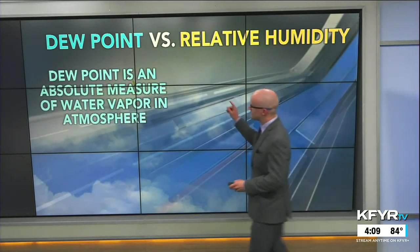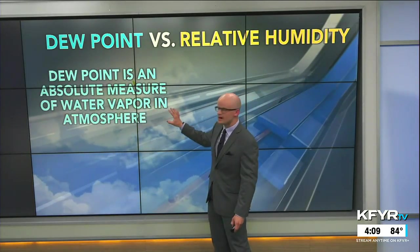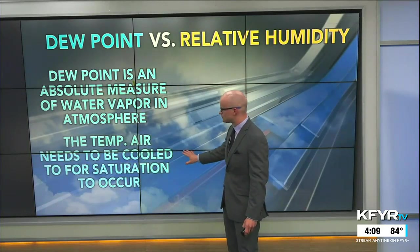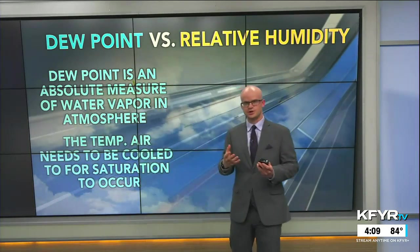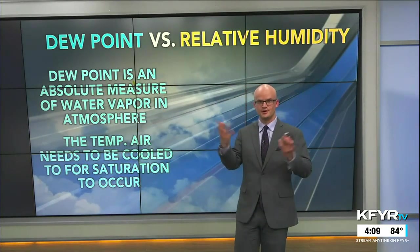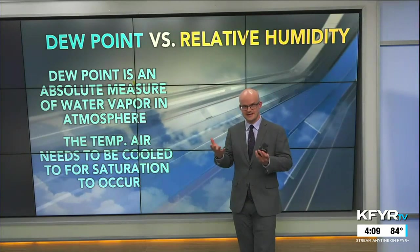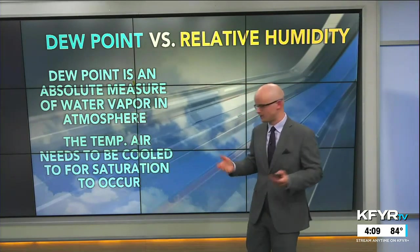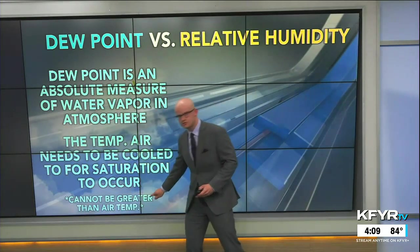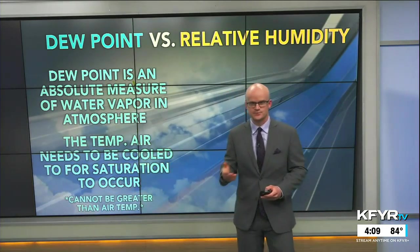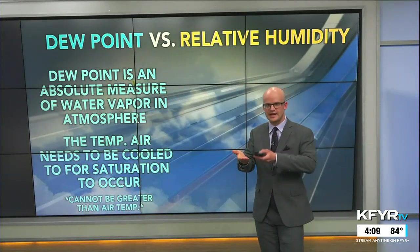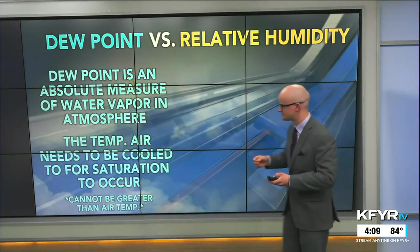Dew point is an absolute measure of the amount of water vapor in our atmosphere. It's the temperature that air needs to be cooled to for saturation to occur — in order for dew to form on grass, or for water vapor to condense into water droplets, fog, or something along those lines. The dew point cannot be greater than our air temperature, so if we have an air temperature of 50 degrees, the dew point has to be lower than that. We can't have a dew point of 55, for example.